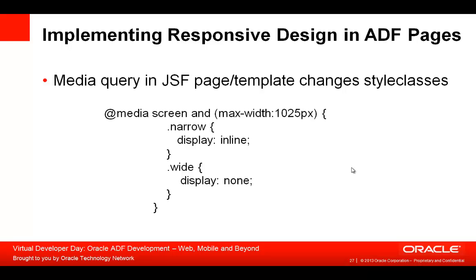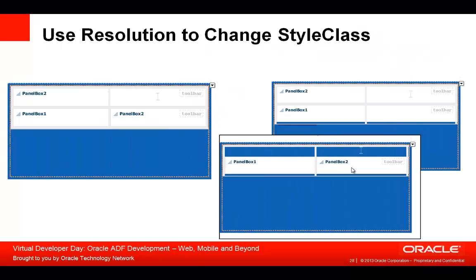Let's see an example of how you build such a page and how it behaves at runtime. The concept is straightforward: you design a page containing items for all cases. In our example, we display two boxes — panel box one and panel box two — but we have two instances of panel box two: one on top and one on the right side. If we are in a wide display, we hide the top one and show the right one. If we are on a narrow display, we hide the side one and show the top one. To do this, we change the style sheet of the box to use display true or false for specific components in specific resolutions.